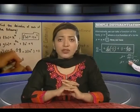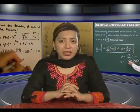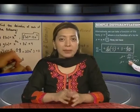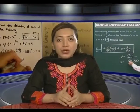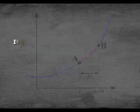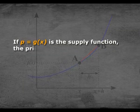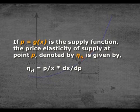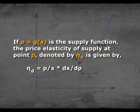The elasticity of supply with respect to price is the proportionate change in quantity supplied divided by the proportionate change in price. If p = g(x) is the supply function, the price elasticity of supply η_s = (p/x)·(dx/dp).